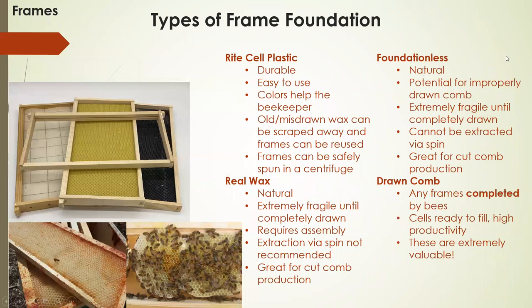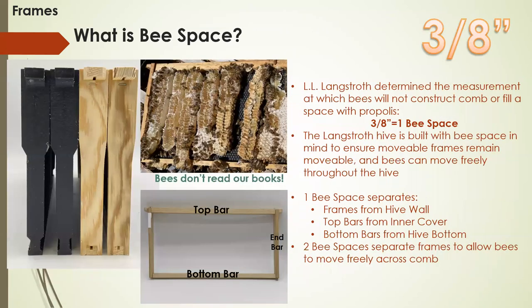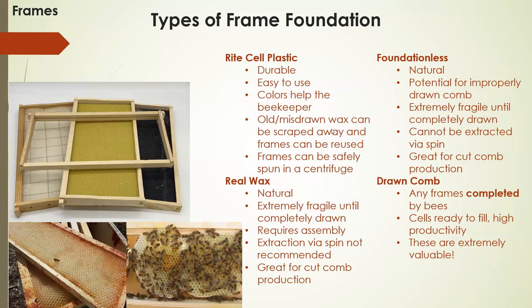Types of foundation: just like a frame is to a picture, the foundation is the picture and the frame is the frame itself. There's right-cell plastic — you can see the yellow and the black here. These are incredibly durable and reusable. If you have improperly drawn comb, you don't have to throw the entire frame away — just use your hive tool, scrape that wax away, and they'll rebuild on the same frame right away. Real wax foundation is something a lot of people really like — they think bees take to it better and it's better for the bees. However it's also incredibly fragile. If you're just starting out, I'd recommend going with right-cell plastic, or at least mostly right-cell with a couple foundationless or real wax frames.